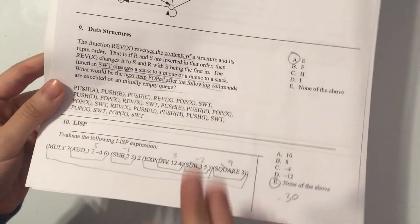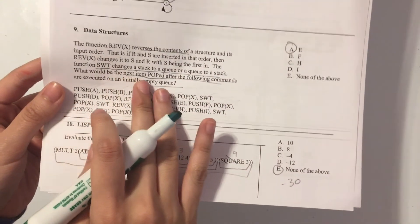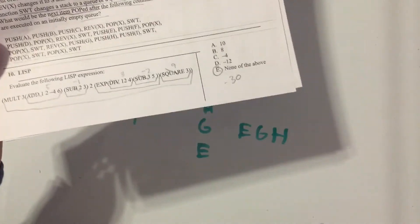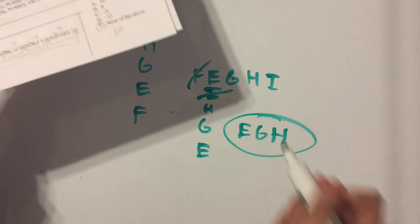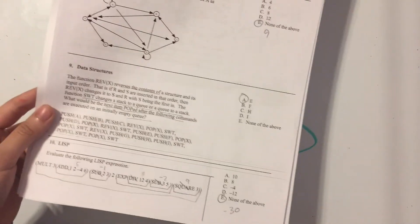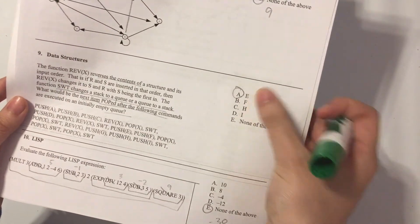And the question is asking us, what would be the next item popped after the following commands? So we followed all of the commands and we're in a queue now. So whatever is in the first position is going to be popped. And the answer is E.